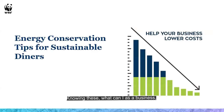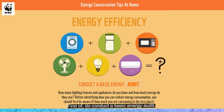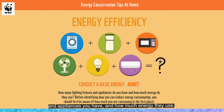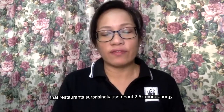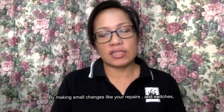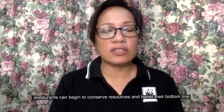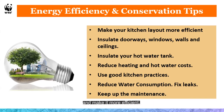Knowing these benefits, what can you do as a business or household to enjoy them? This leads us to energy efficiency and conservation tips you can apply. First, conduct a basic energy audit — know how many lighting fixtures and appliances you have and how much energy they use. Calculate their consumption so you know where to start. Aside from checking appliances and lighting, look at your space. Research shows restaurants use about 2.5 times more energy per square foot than any other type of commercial building. By making small changes in layout and behavior, restaurants can conserve resources and boost their bottom line — such as making your kitchen layout more efficient.